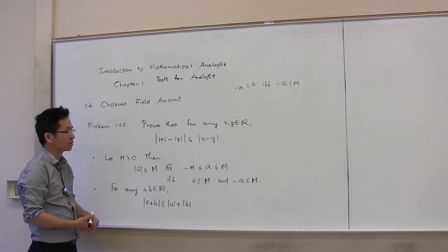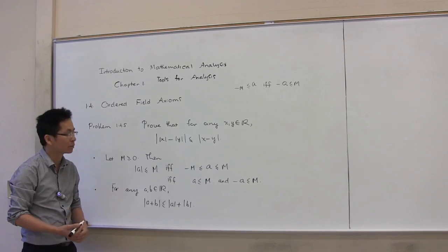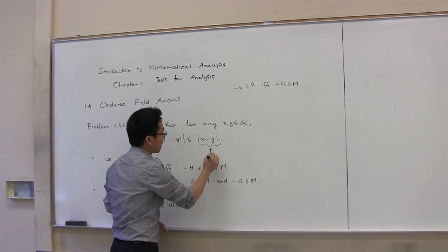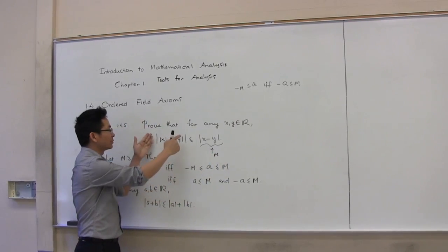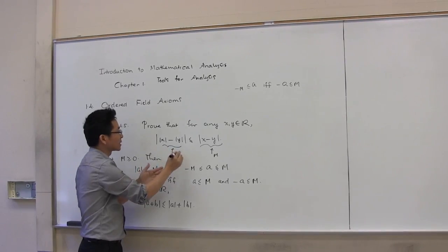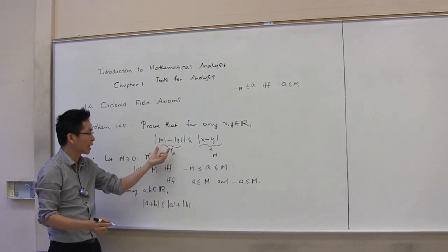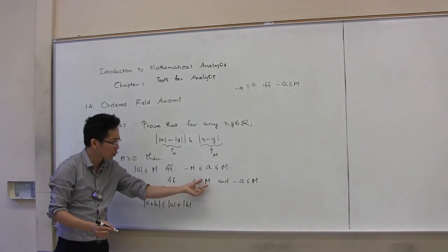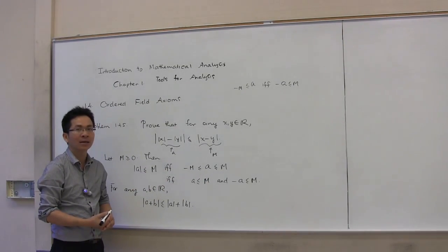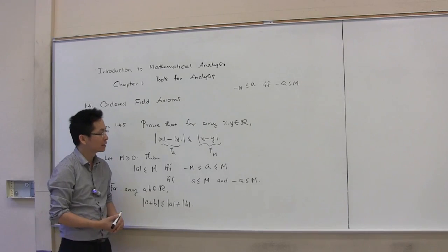The approach we're going to use to solve this problem is as follows. Since |x - y| is a non-negative real number m, in order to prove that |a| ≤ m, we're going to show that a ≤ m and at the same time -a ≤ m. Let me go ahead and apply the triangle inequality to prove the inequality.